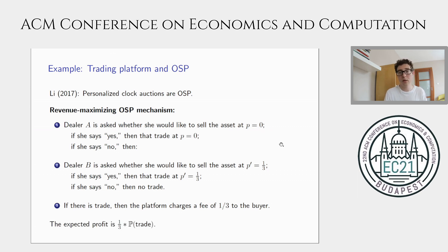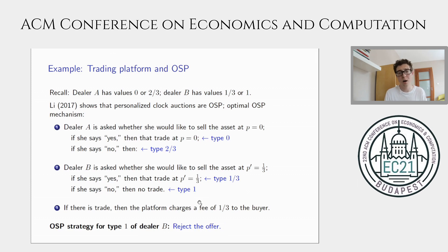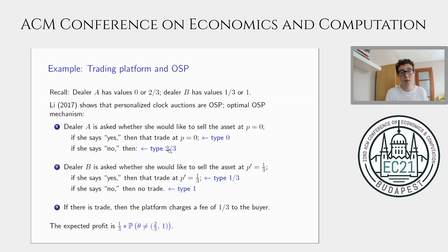To compute the expected profit, we multiply the fee of one-third times the probability of trade, which requires computing the equilibrium in obviously dominant strategies. Type zero of dealer A accepts the initial offer of zero; type two-thirds rejects since she won't sell below her value. For dealer B, type one-third accepts the offer, but type one rejects. Trade occurs in all cases except when dealer A is type two-thirds and dealer B is type one. That probability is three-over-five, so the profit in this mechanism is one-over-five.